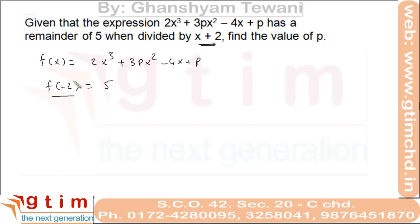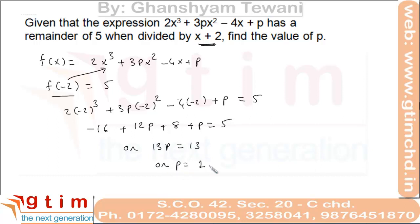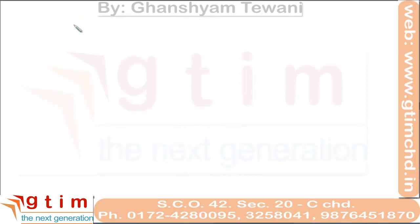To get f(minus 2), we put x equal to minus 2, so we have 2 times minus 2 cubed plus 3p times minus 2 squared minus 4 times minus 2 plus p equal to 5. Solving this, we get the value of p equal to 1.